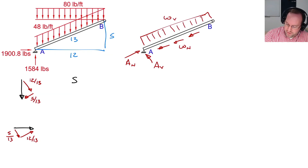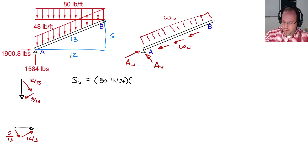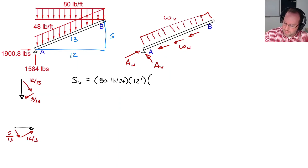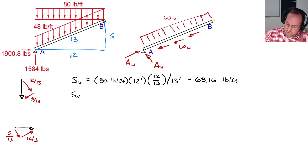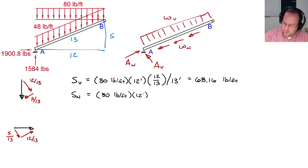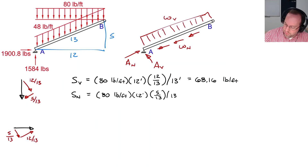For the snow load shear component SV: 80 lb/ft applied over 12 feet (horizontal projection), multiplied by 12/13 for the shear direction, then distributed over 13 feet, gives 68.16 lb/ft. For the axial component SN: same 80 lb/ft over 12 feet, multiplied by 5/13, distributed over 13 feet, gives 28.40 lb/ft.